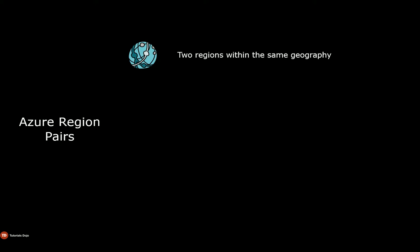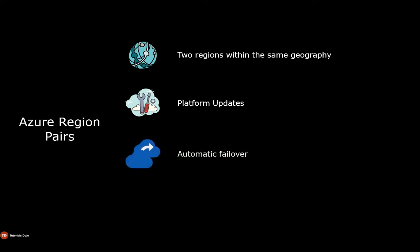What are region pairs for? The first is platform updates — when Azure conducts planned maintenance in a regional pair, it will only update one region in each pair at a time. There are also Azure services such as geo-redundant storage that automatically replicate your data to a secondary region, which is your paired region. For example, if you enable geo-redundant storage replication in your storage account in the Southeast Asia region, Azure will send the replicated data to East Asia, as it is the region pair of the Southeast Asia region.